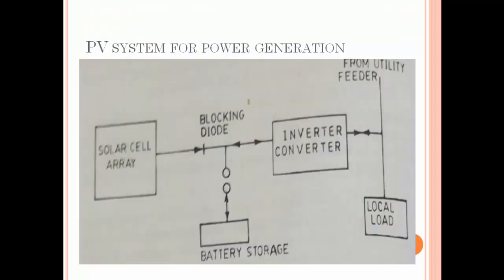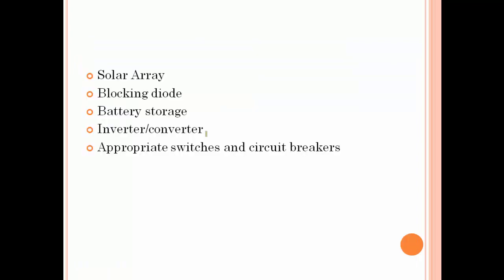For a photovoltaic system for power generation, a PV system consists of: a solar cell array, a blocking diode, an inverter or converter, battery storage, a local load, and appropriate switches and circuit breakers.